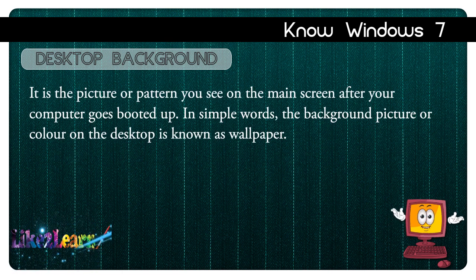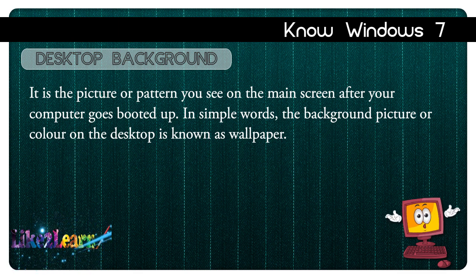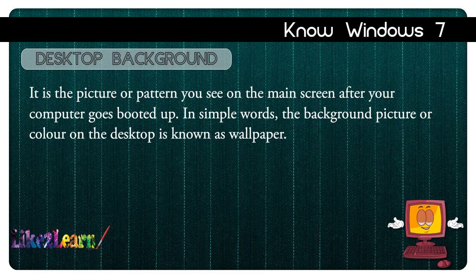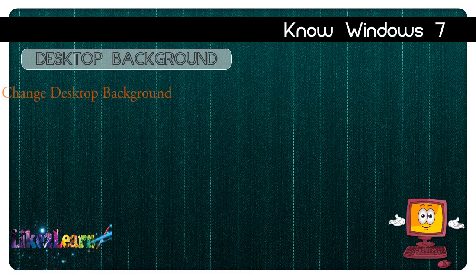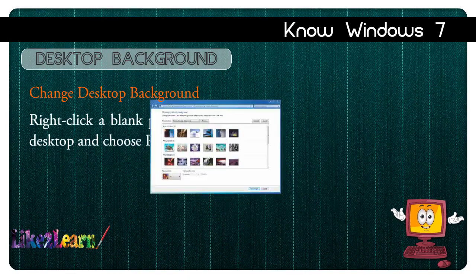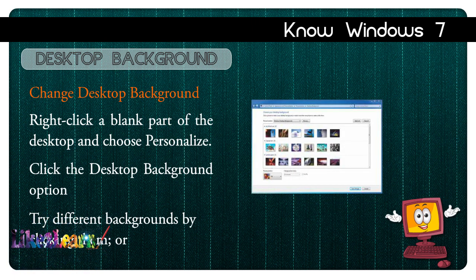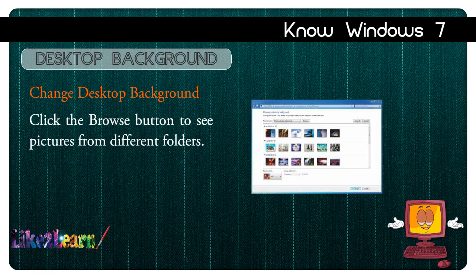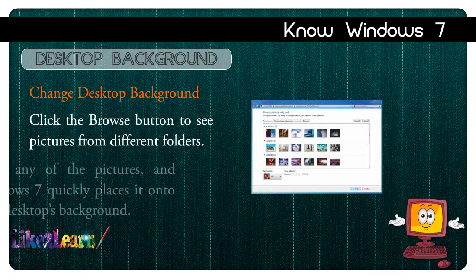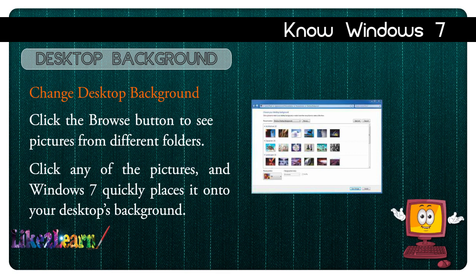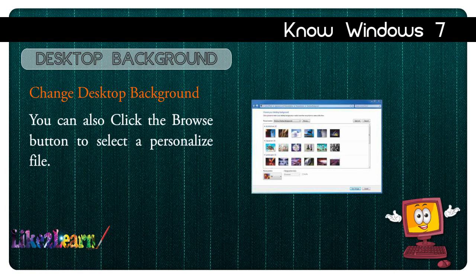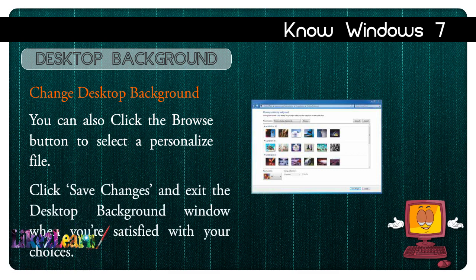Desktop background is the picture or pattern you see on the main screen after your computer boots up. In simple words, the background picture or color on the desktop is known as wallpaper. To change the desktop background, right-click a blank part of the desktop and choose Personalize, then click the Desktop Background option. Try different backgrounds by clicking them, or click the Browse button to see pictures from different folders. Click any picture and Windows 7 quickly places it onto your desktop background.